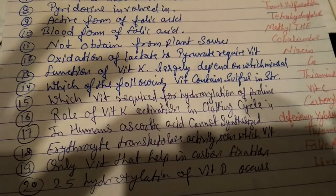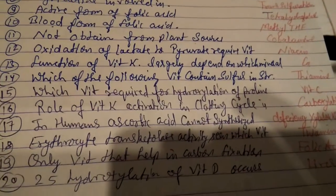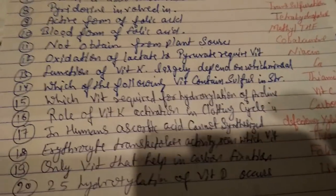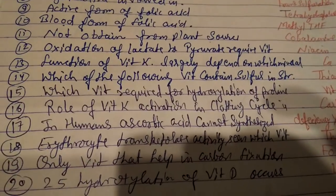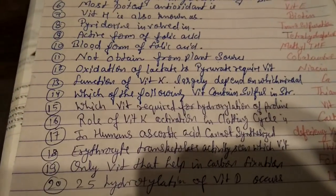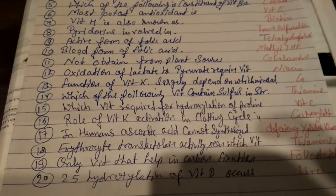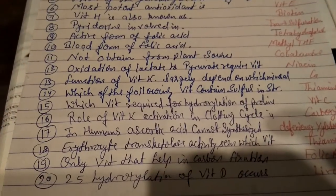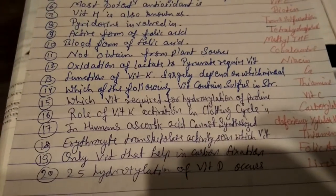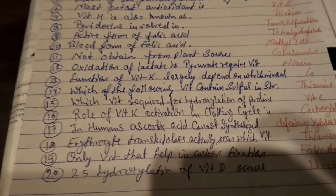The role of Vitamin K in activation of the clotting cycle is carboxylation — question number sixteen, carboxylation. In humans, ascorbic acid cannot be synthesized due to deficiency of xylose kinase. Erythrocyte transketolase activity is seen with which vitamin? It is with thiamine. The only vitamin that helps in carbon fixation is folic acid — F for fixation and F for folic acid.